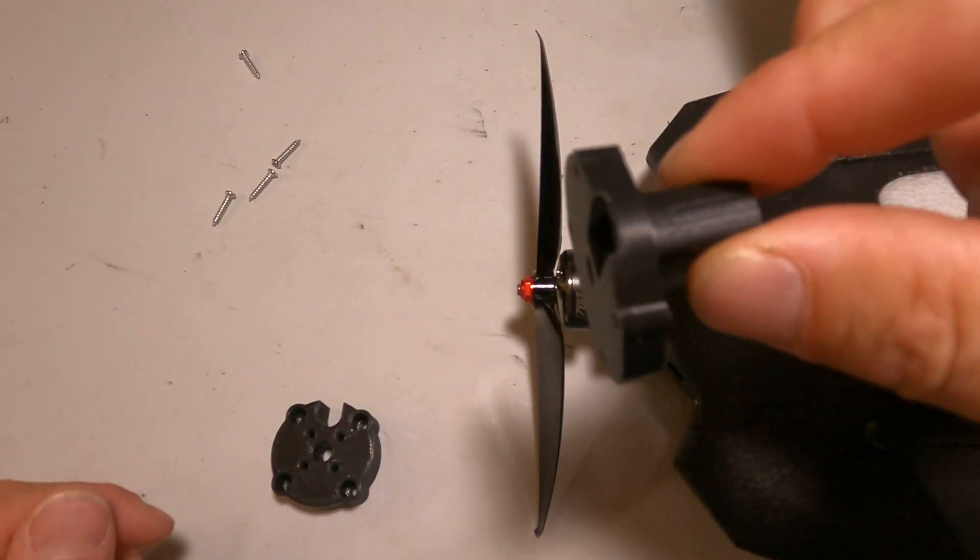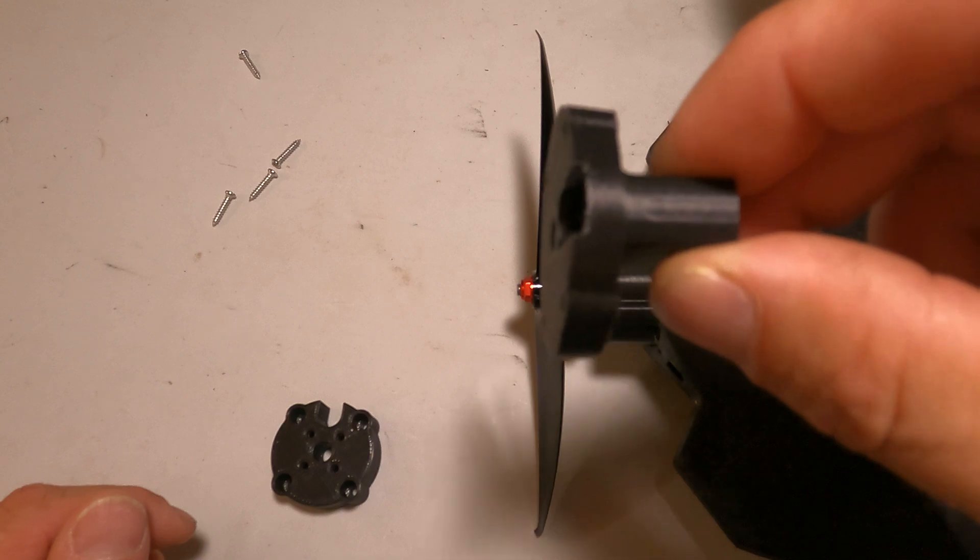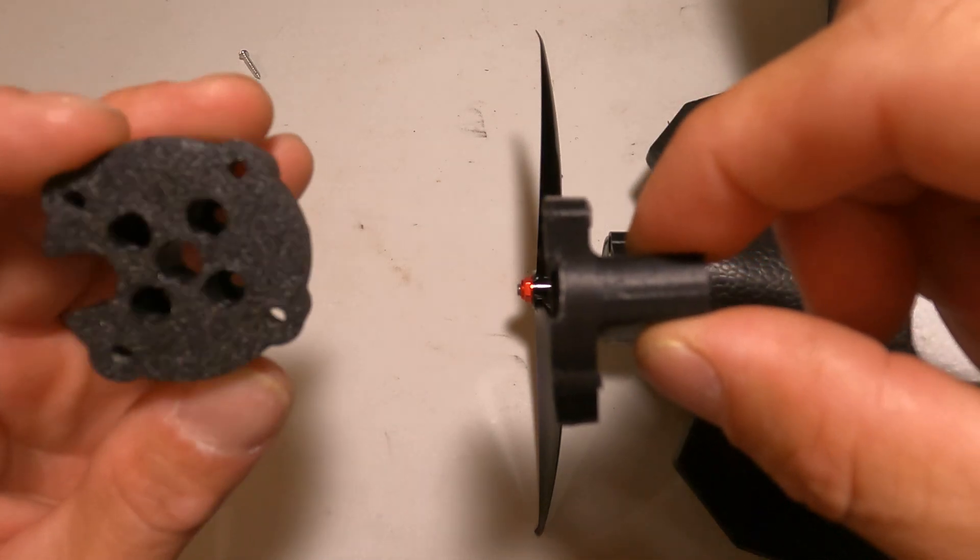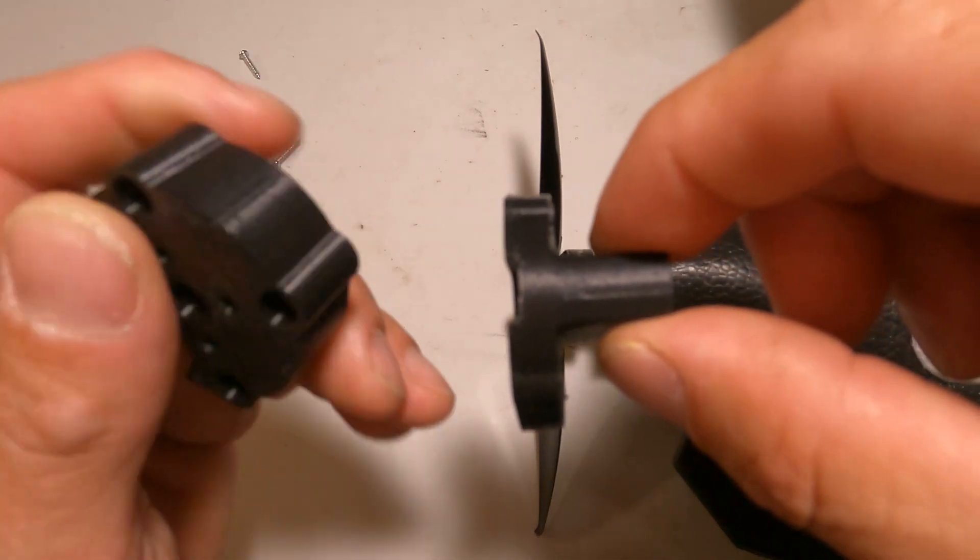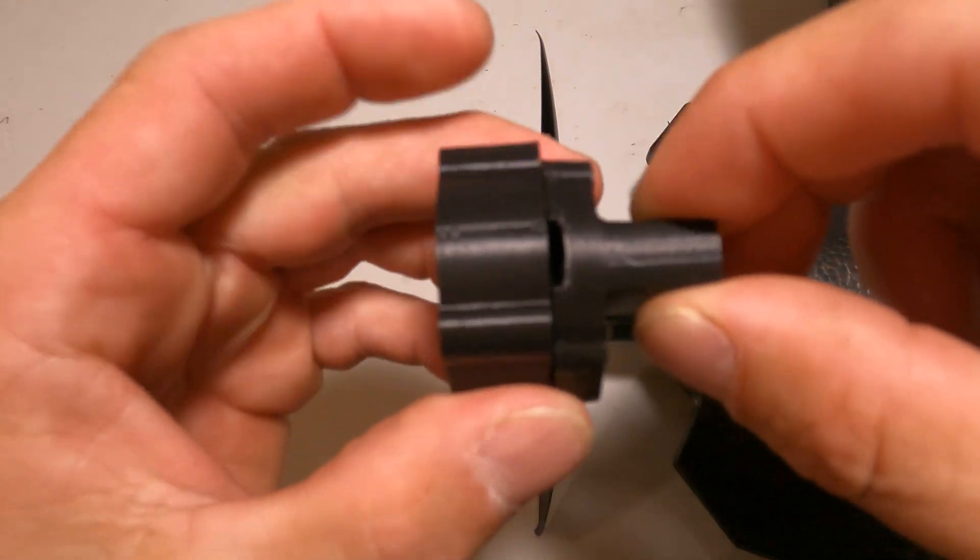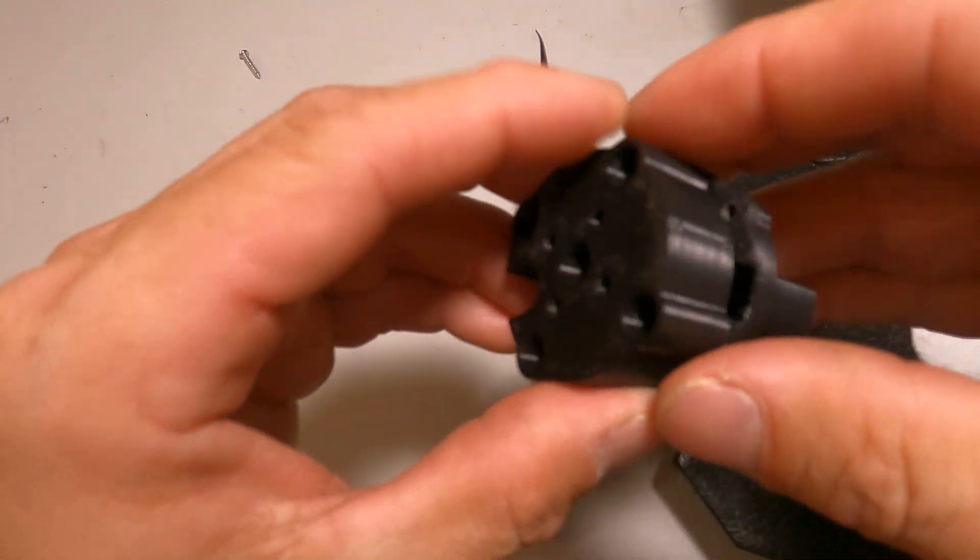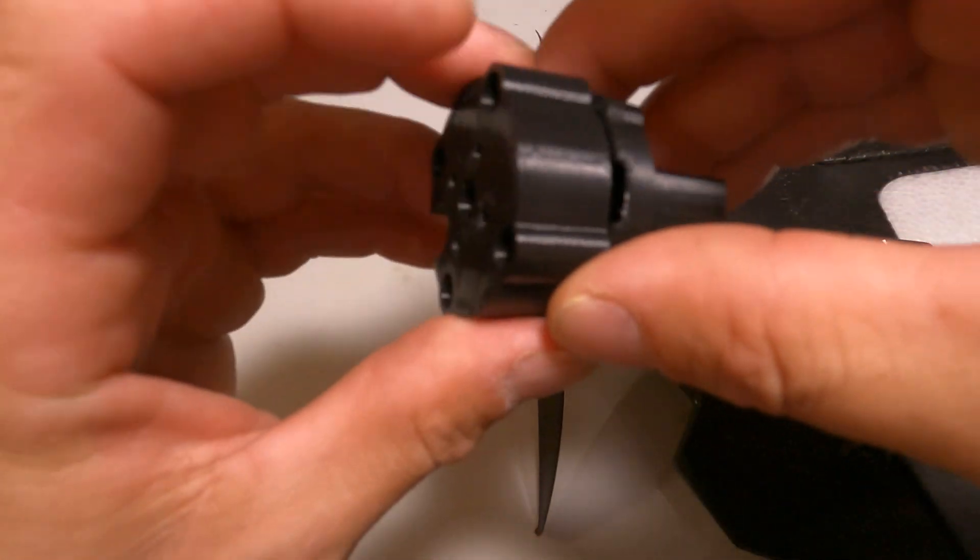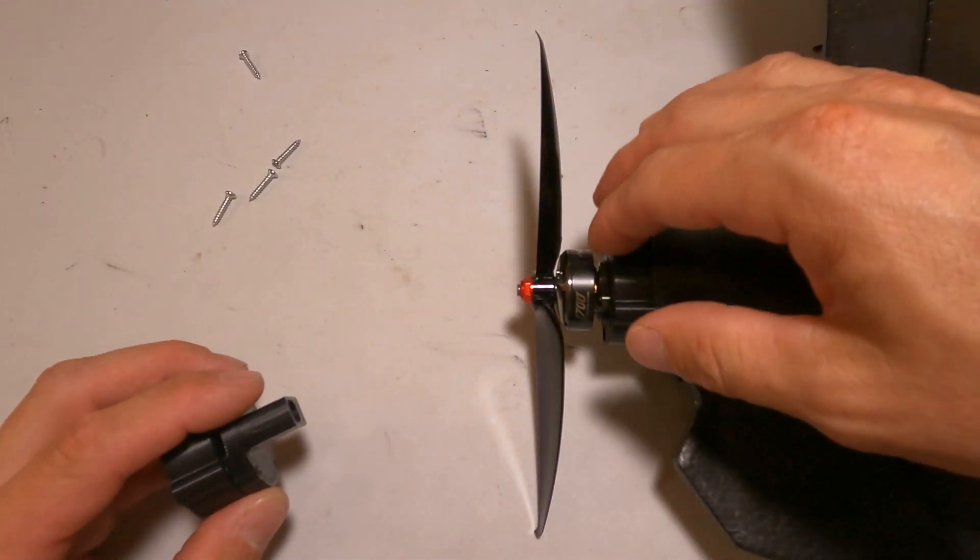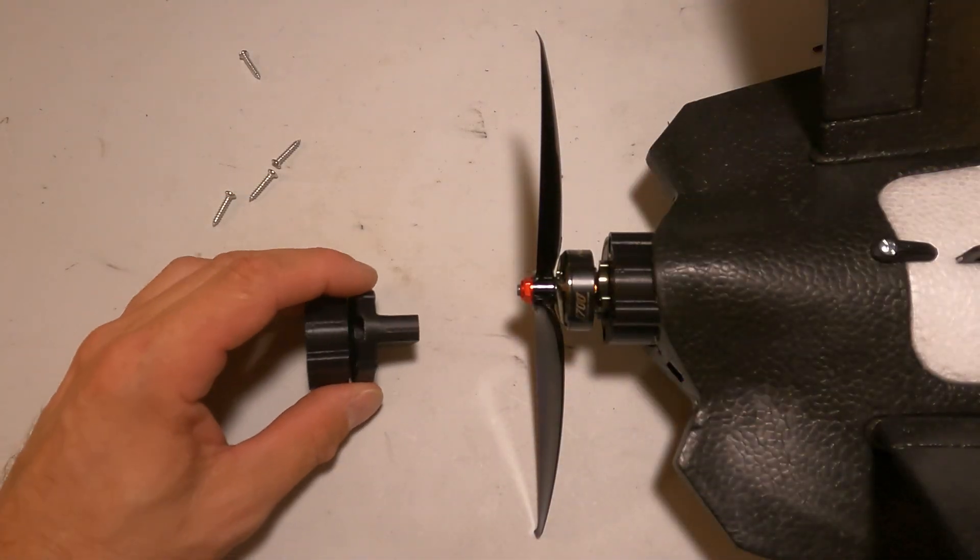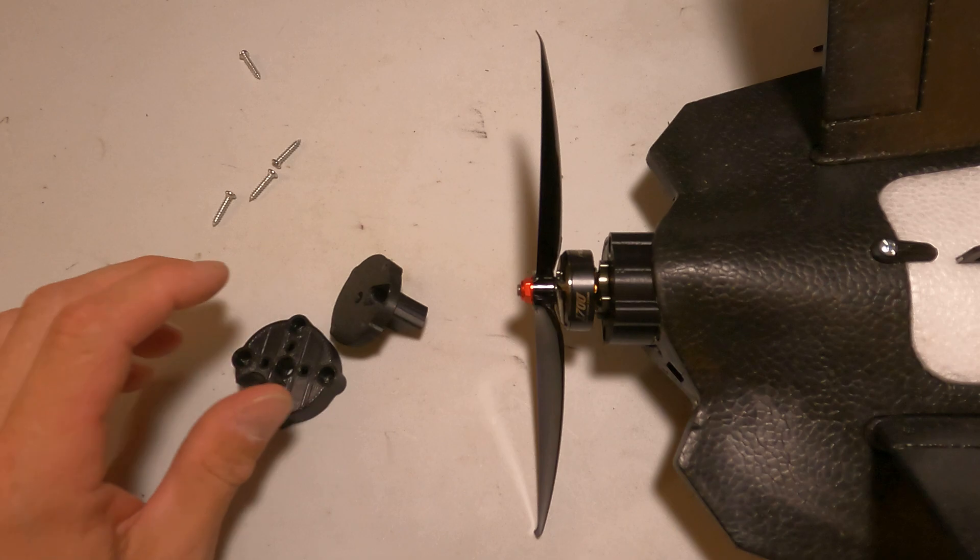So this end mounts to the actual Dolphin itself, to the aircraft, and then this piece right here is what mounts to it, and then the motor mounts to it. I'm going to show you all this real quick, and this is what it looks like mounted up on the craft.